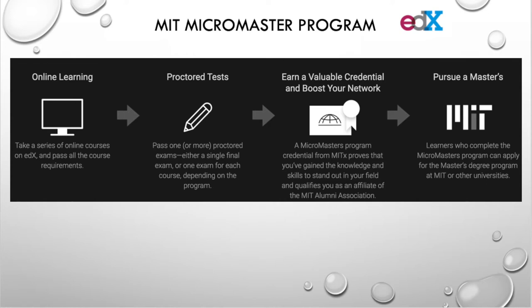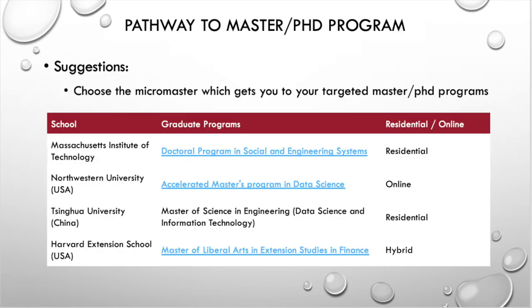MIT MicroMasters programs are for online learners from anywhere in the world. Different from other online learning programs, it's also a pathway into multiple masters and PhD programs all around the world. I don't know how much this credential would help with your application, but once you get admitted to certain programs, you could transfer the credits from your MicroMasters and accelerate your program.